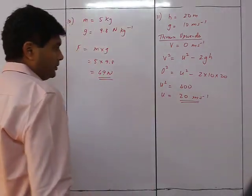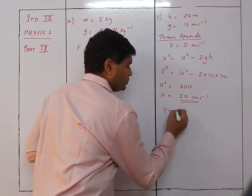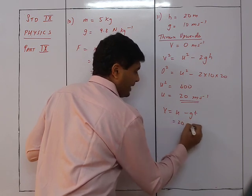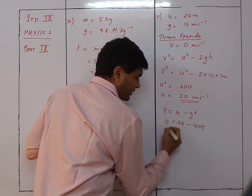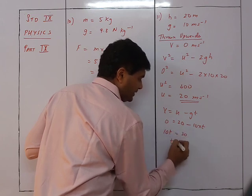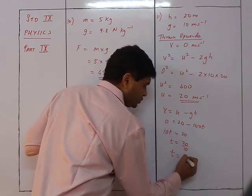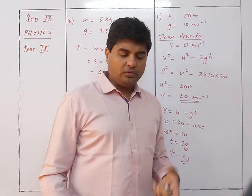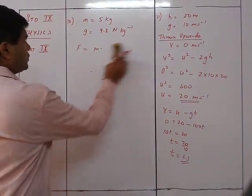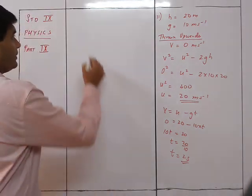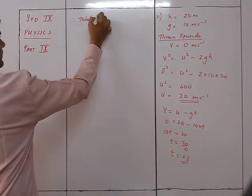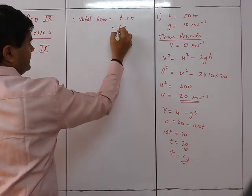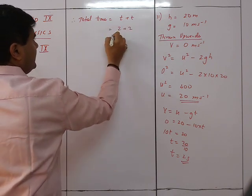To find time going up: v = u − gt, so 0 = 20 − 10t, giving t = 2 seconds. Time taken to go up equals time taken to come down, so total time = 2 + 2 = 4 seconds.